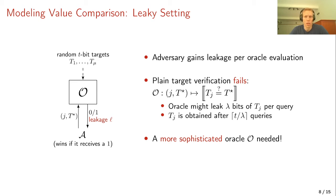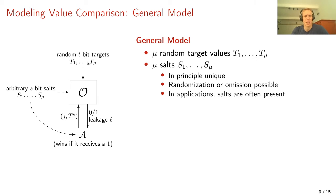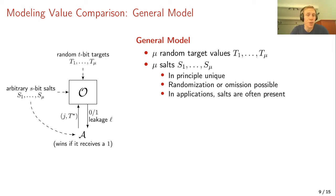Before going to the designs, we make a slight generalization of the model by adding salts. The oracle O gets as input mu random t-bit targets t1 to t_mu and mu s-bit salts s1 to s_mu, where s_j is coupled to t_j. The salts are given to the adversary and need not be unique. In many practical applications salts are present anyway. The oracle O is defined based on a cryptographic primitive such as a random permutation or block cipher.